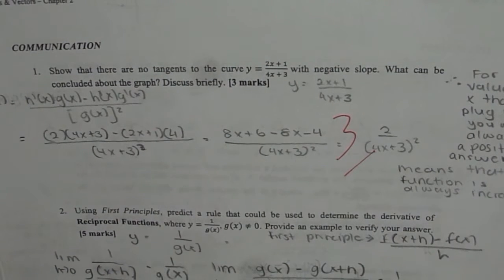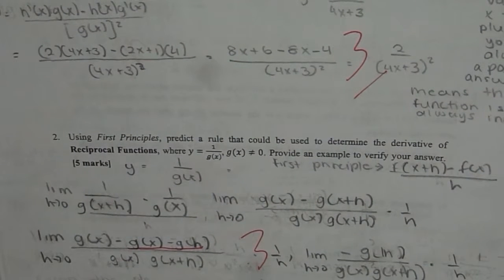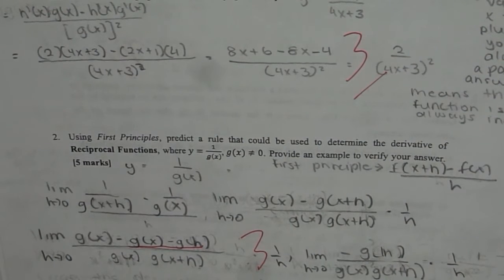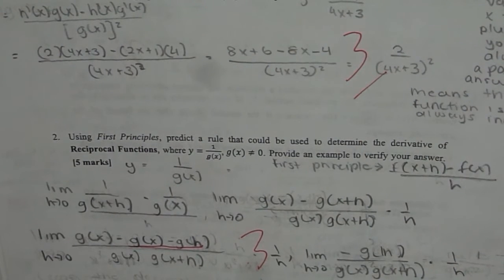And the last question here is using first principle predict a rule that could be used to determine the derivative of reciprocal functions where y equals to 1 over g of x, g of x is not equal to 0. Provide an example to verify your answer.